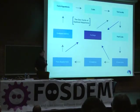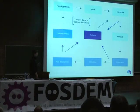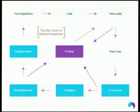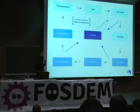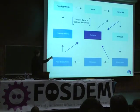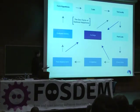This is what we call the development cycle of optimal happiness. Most people do the simple side: have an idea, code it, test it locally, then push code. But it's not optimal, because you're only testing manually and locally, and as the code base grows, it becomes harder. We're only human and we make a lot of mistakes.